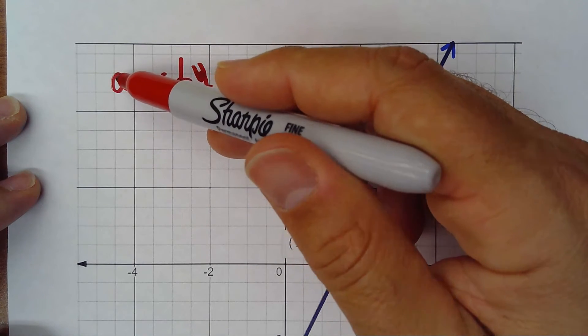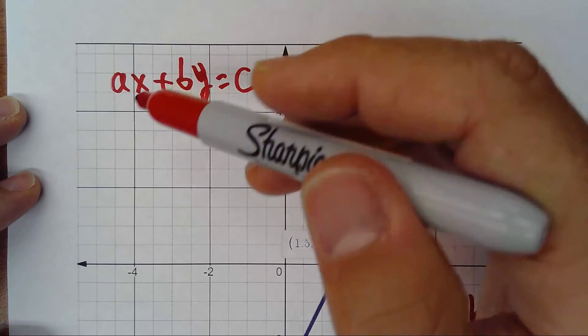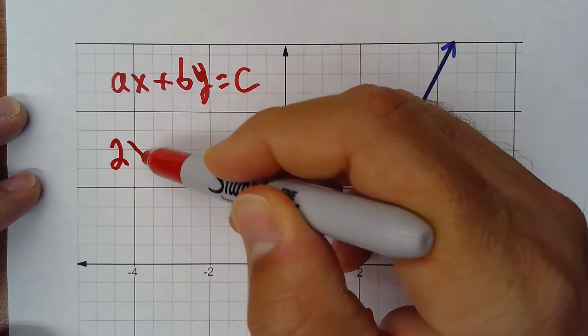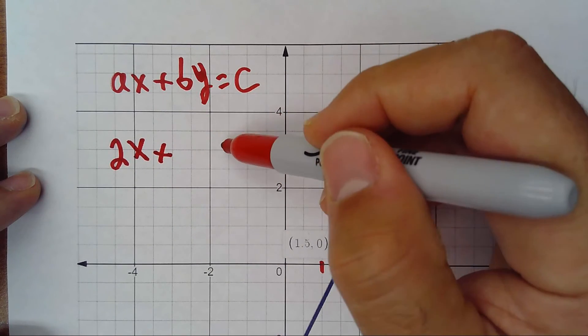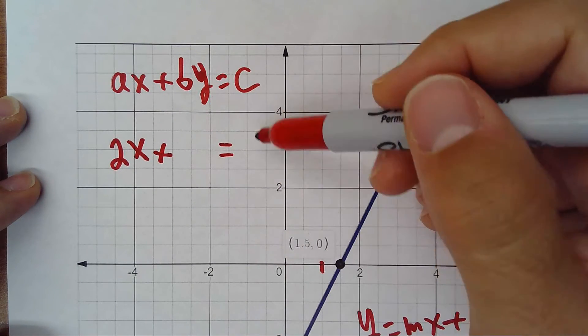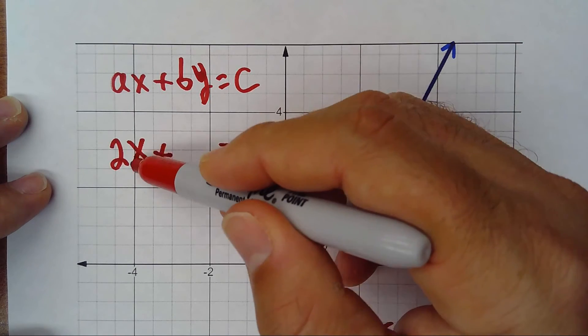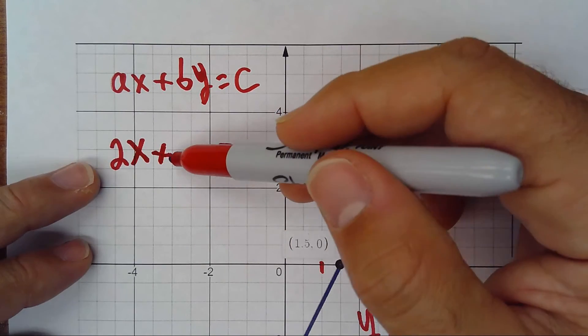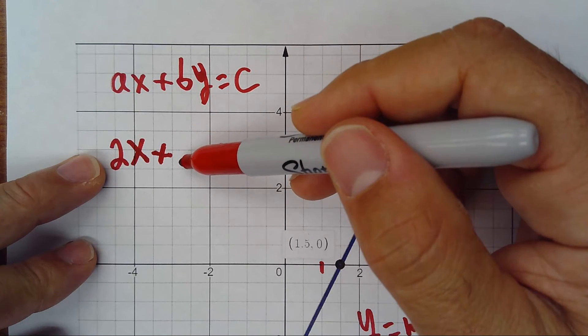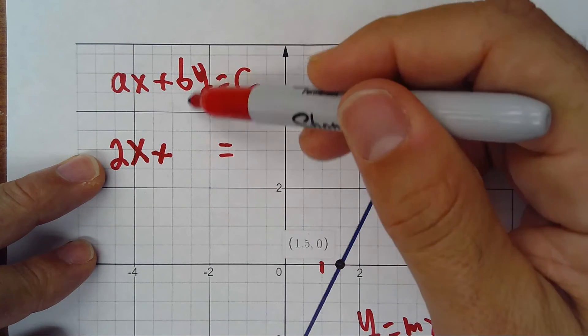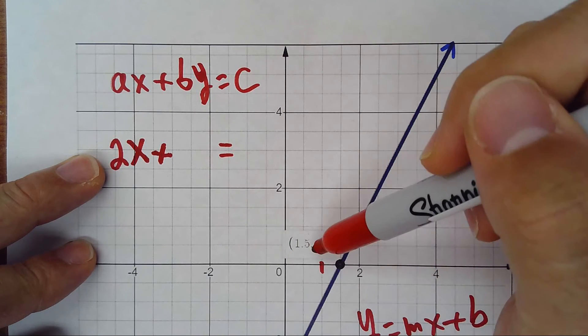If a is 2, then 2x plus y will equal c. So 2x times... once you make this 0, the answer needs to be 1.5. Here it could be divided by 2 to have 1.5, so it will be 3.